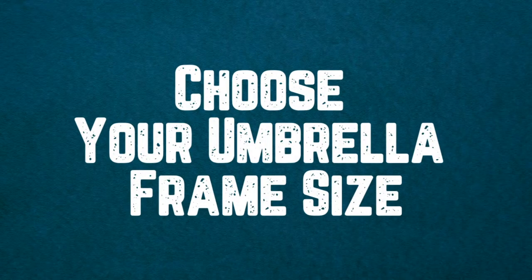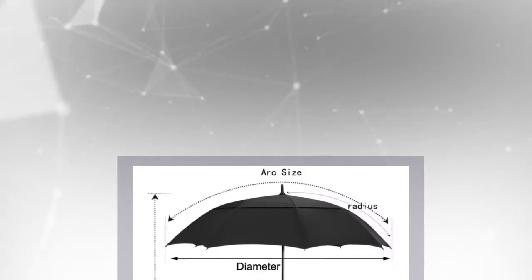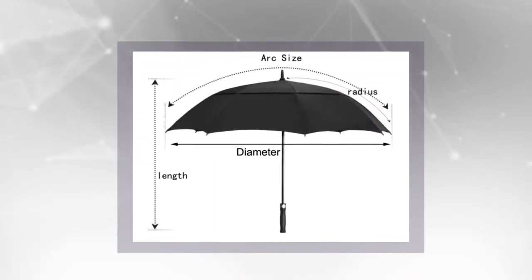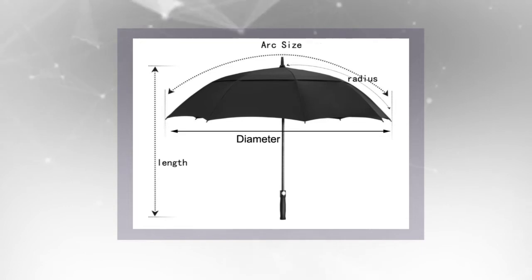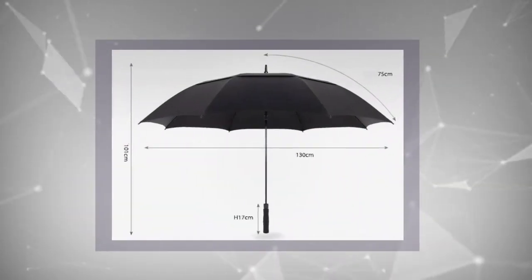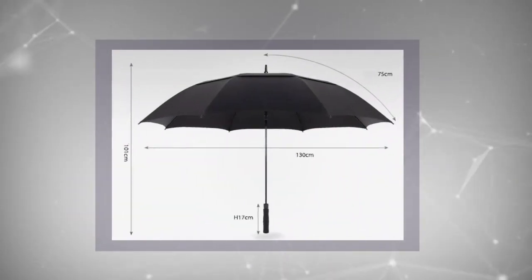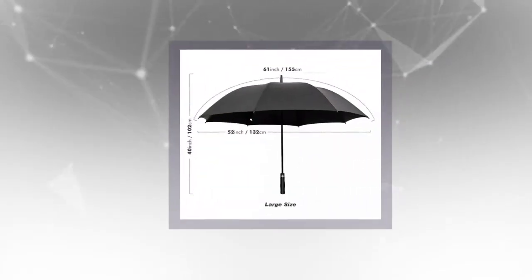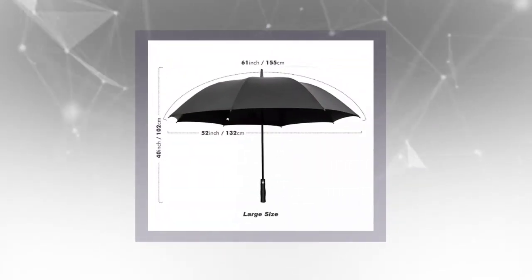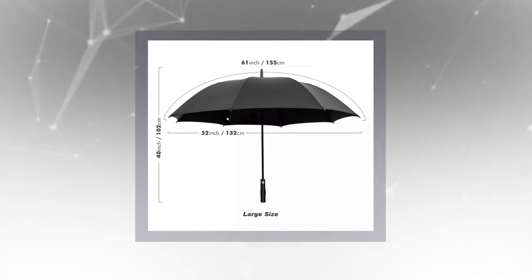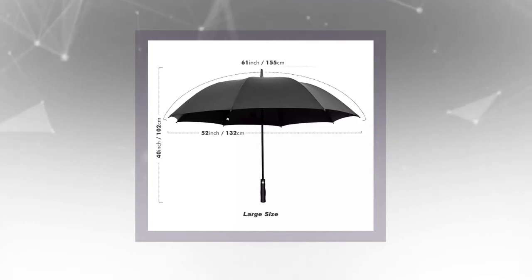Step 2: Choose Your Umbrella Frame Size. An umbrella frame refers to the umbrella's structure — it includes the handles, ribs, and shaft. In more precise terms, the frame is to an umbrella what a skeleton is to a human. There are different frame sizes you can choose from: Compact Manual, Compact Auto, Full Size Standard, and Large Gold Sizes.